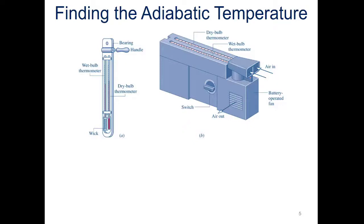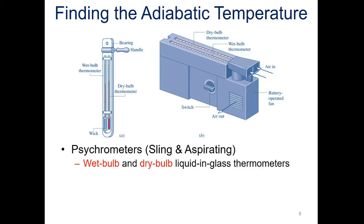A psychrometer. So here are two different types of psychrometers, sling and aspirating. Here on the left is our sling psychrometer, and the aspirating one is on the right.